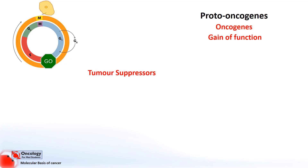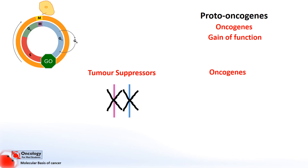Because we have two copies of each gene, to stop a gene from producing a properly functional protein, both copies have to be taken out. This type of loss of function applies to tumor suppressor genes. But this isn't the case with oncogenes. Because we're talking about genes that gain a function, it's only necessary for one copy to become mutated to promote the growth of cancer.